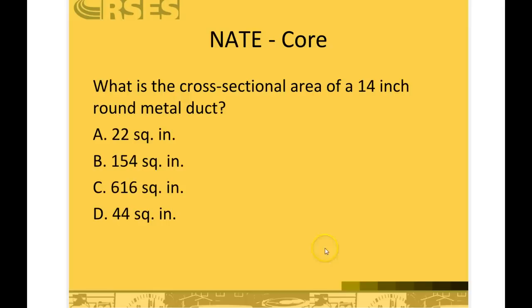Now, it's your turn. What's the cross-sectional area of a 14-inch round metal duct? Pause the video and work your problem. The answer is 154 square inches.